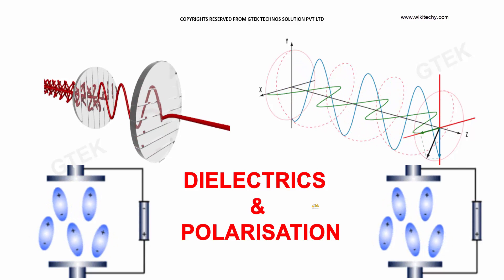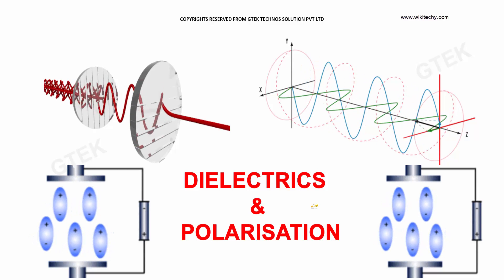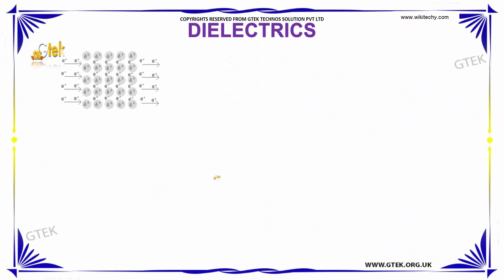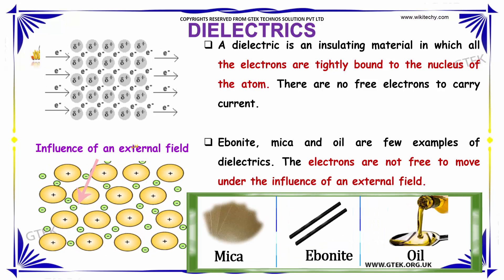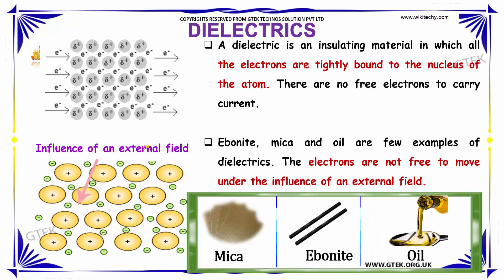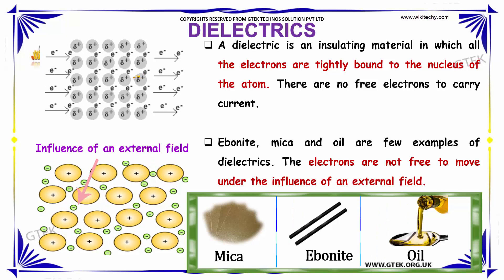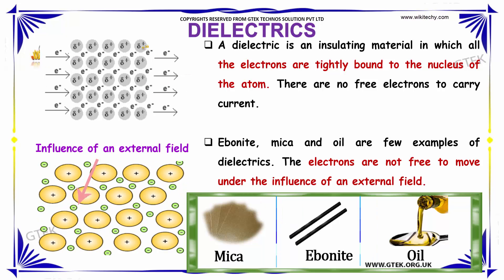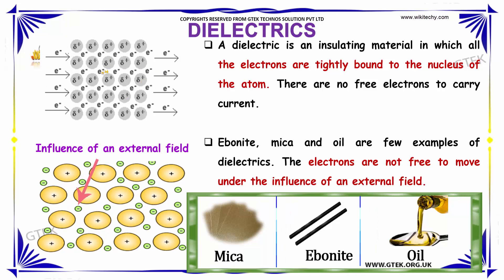Now let's move on to the interesting concept called dielectrics and polarization. A dielectric is considered to be an insulating material in which all the electrons are tightly bound to the nucleus of an atom, as shown here.